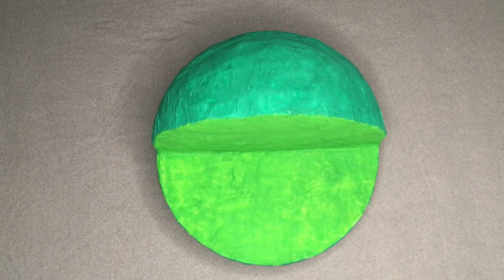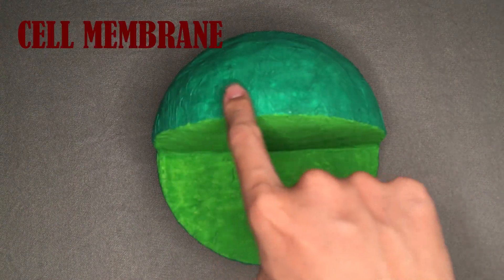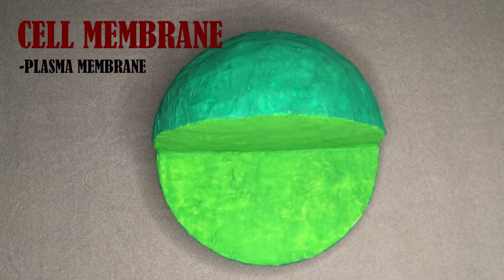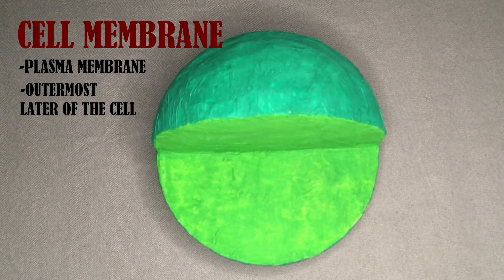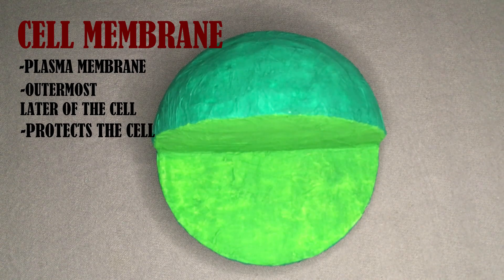The first part of the cell that we are going to discuss is the cell membrane. The cell membrane, also known as the plasma membrane, is the outermost layer of the cell. It provides protection for the cell, and it is responsible for providing a fixed environment inside the cell.